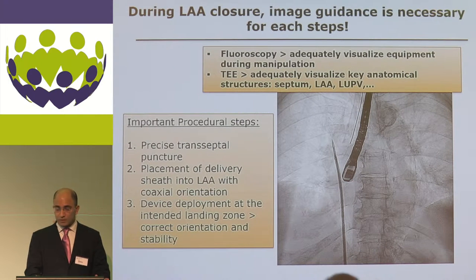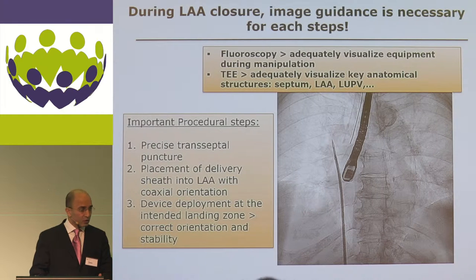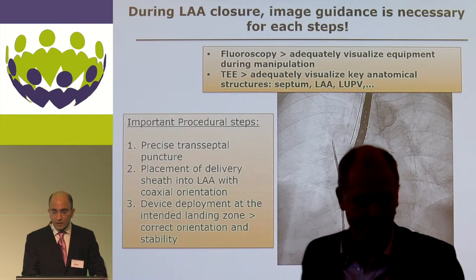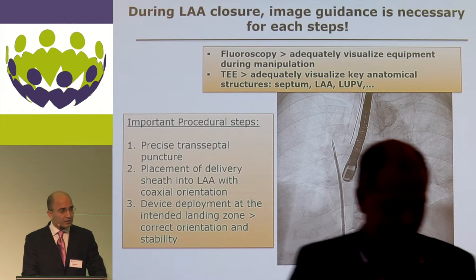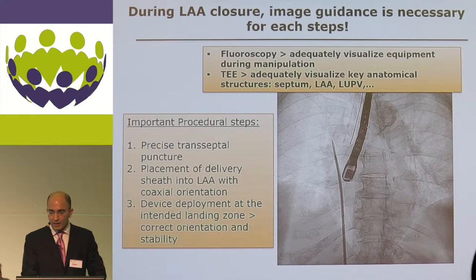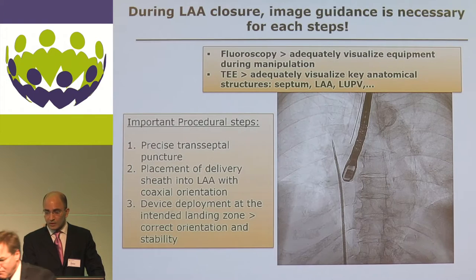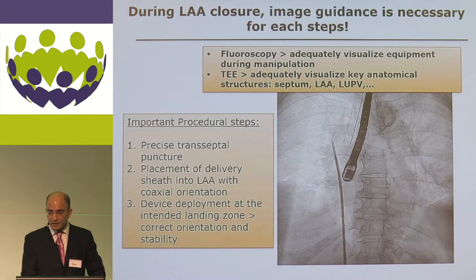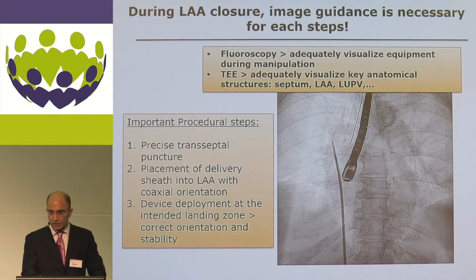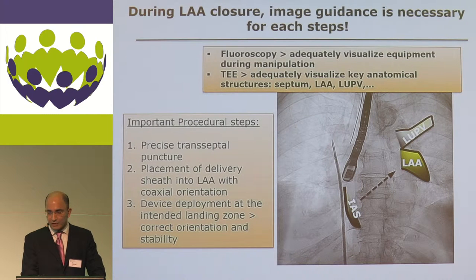We have some tools for this. Fluoroscopy allows us to adequately visualize the equipment, the catheter and so on, but we cannot visualize soft tissue. That's where we need TEE, because we need to adequately visualize the key anatomical structures: the interatrial septum, the left atrial appendage, and the left upper pulmonary vein.